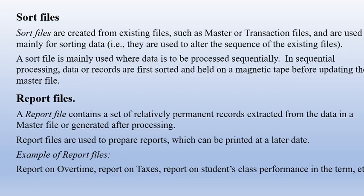Sort files are created from existing files such as master or transaction files and are used mainly for sorting data — changing the sequence of existing files. A sort file is mainly used where data is to be processed sequentially; records are first sorted and held on a magnetic tape before updating the master file. A report file contains a set of relatively permanent records extracted from a master file or generated after processing. Report files are used to prepare reports which can be printed at a later date — examples include reports on overtime, taxes, and student class performance.